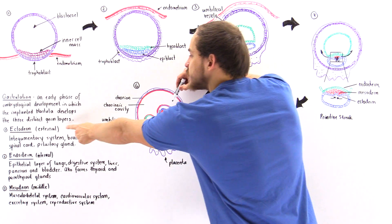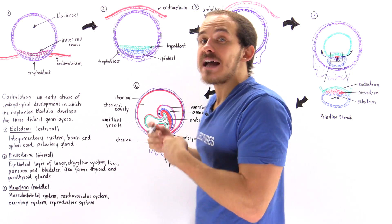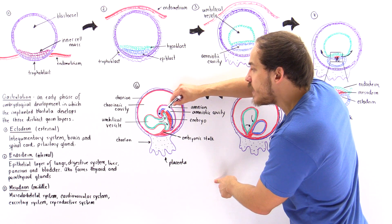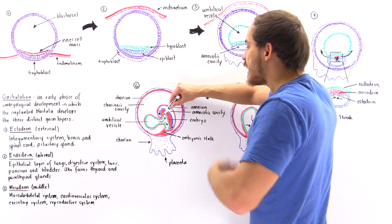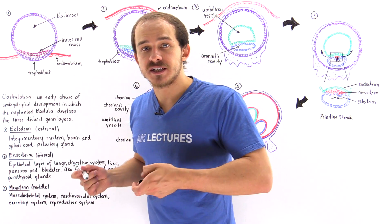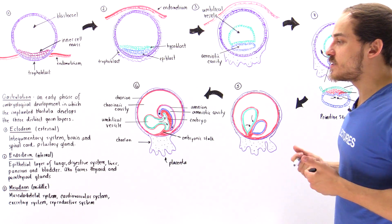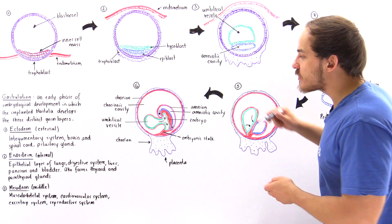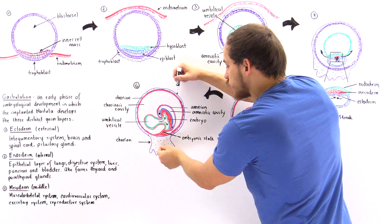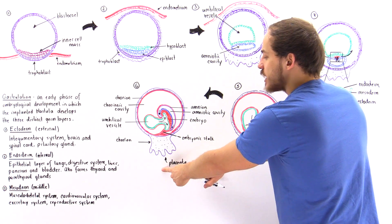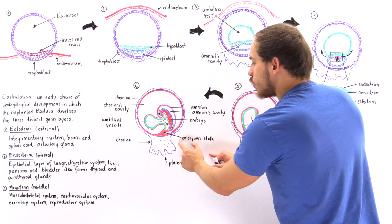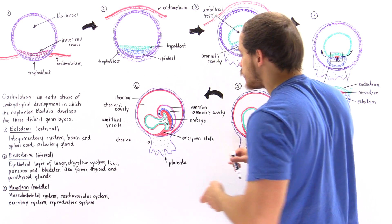The blue layer is found on the outside as the external layer and will develop the skin, the ears, the nails, and the hair. And because this blue layer also moves inside, it forms the nervous system — the brain and the spinal cord. The green layer on the inside will form the digestive system, the epithelial layer of the lungs, the liver, the pancreas, and the bladder. The umbilical vesicle structure and the chorionic cavity are also visible, with the chorion on the outside. The extension that becomes the placenta is connected to the growing embryo by the embryonic stalk, which eventually develops into the umbilical cord connecting the placenta to the developing fetus.